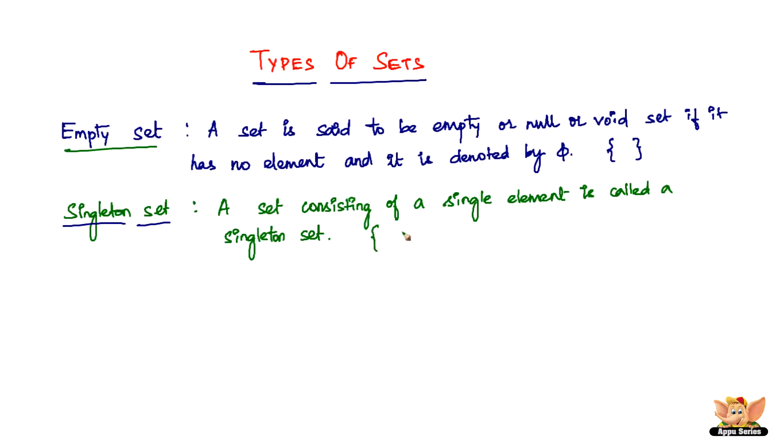Say for example, just something between the two flower brackets, say A, just one element or say 3 or say some symbol theta. So these are singleton sets because it's just got one element irrespective of what element it is.